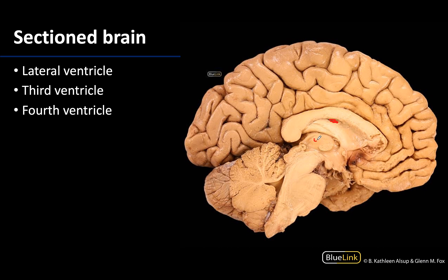The third ventricle is going to be located between the halves of the diencephalon and is often described as a slit-like cavity. The diencephalon is right around this region here, so it's a slit-like cavity between the right and left diencephalon.